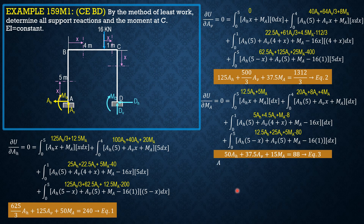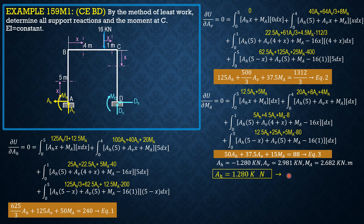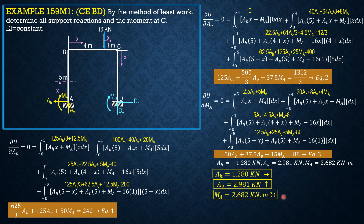Solving these three equations simultaneously gives: Ah = −1.280 kN, Av = 2.981 kN, and moment at A = 2.628 kN·m. Finalizing: Ah = 1.280 kN directed right, Av = 2.981 kN upward, and Ma is clockwise — the negative sign confirms the clockwise direction — with Ah = 1.28 kN leftward.